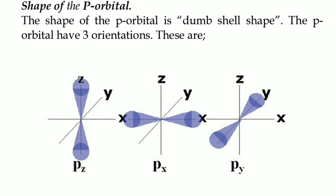The P-orbital has three orientations. It can be Z, it can be X and it can be Y. As you can see here, Z it is vertical, X it is horizontal and Y it is somewhat like diagonal. That is P-orbital.